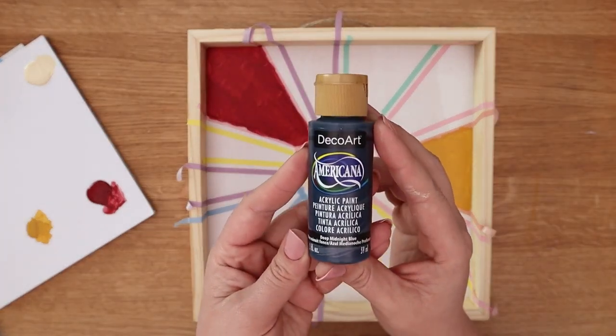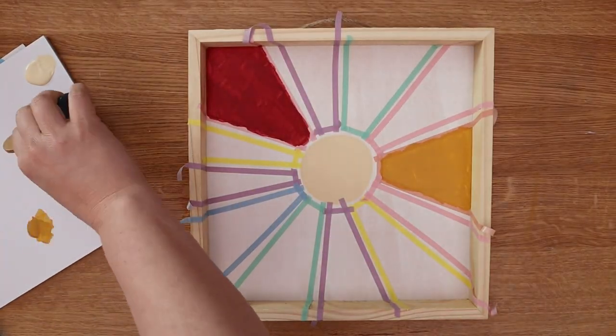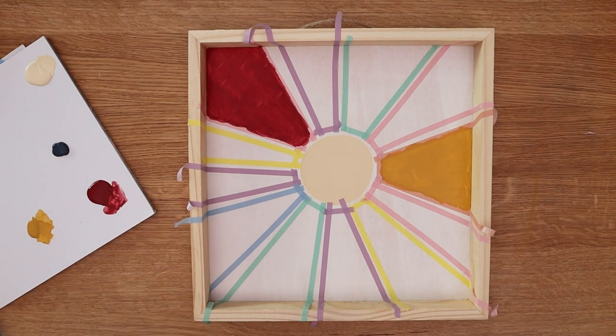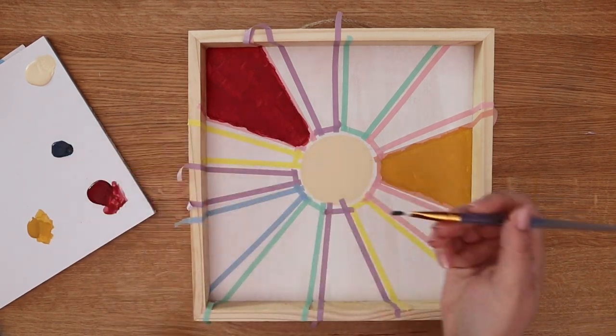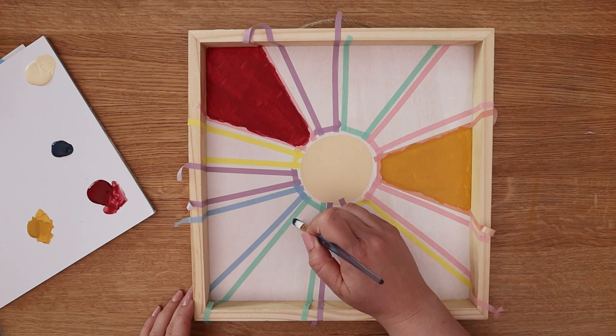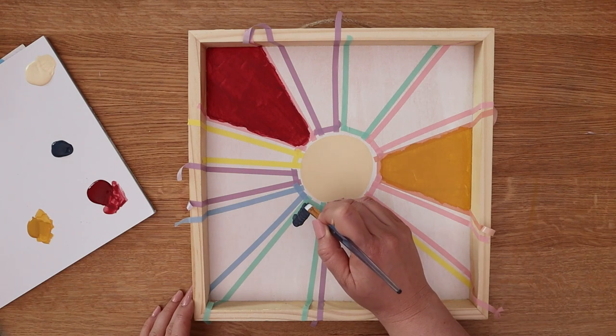For my boho blue I'm using deep midnight blue and again skipping over three sections from the burgundy and the ochre I'm going to fill in that section with my deep blue color.